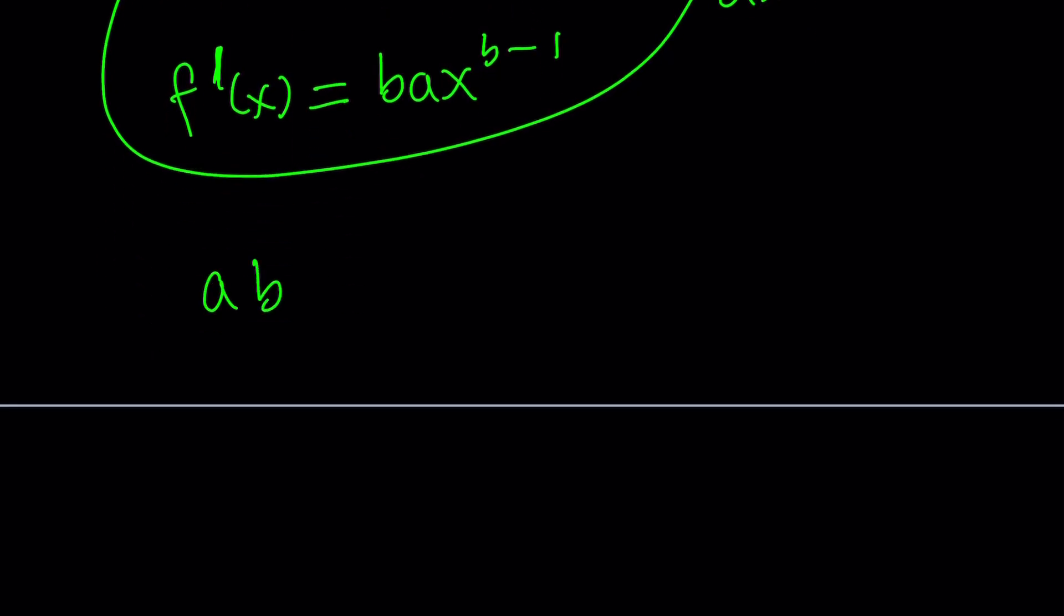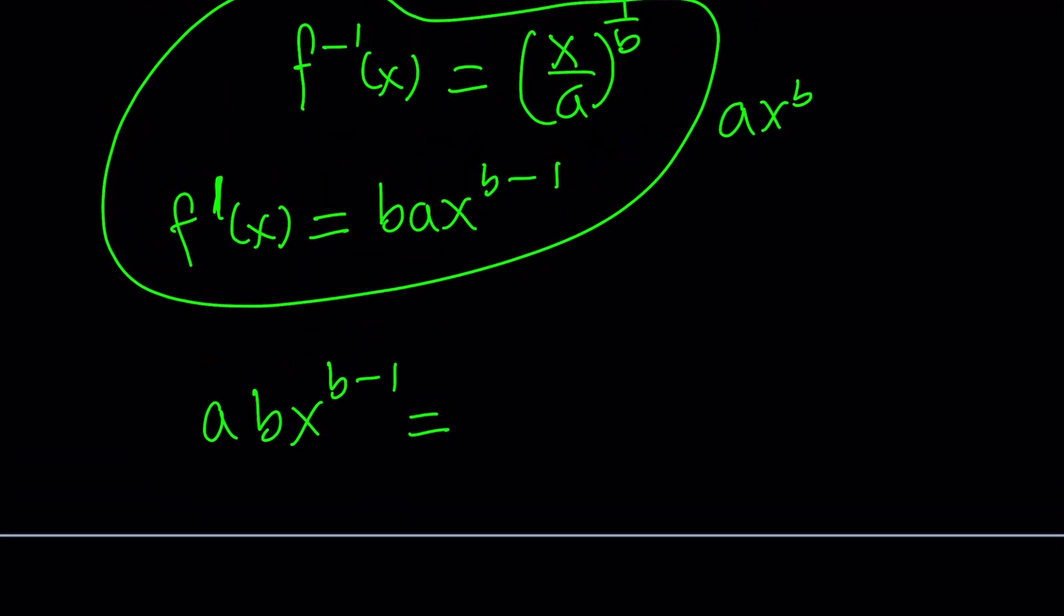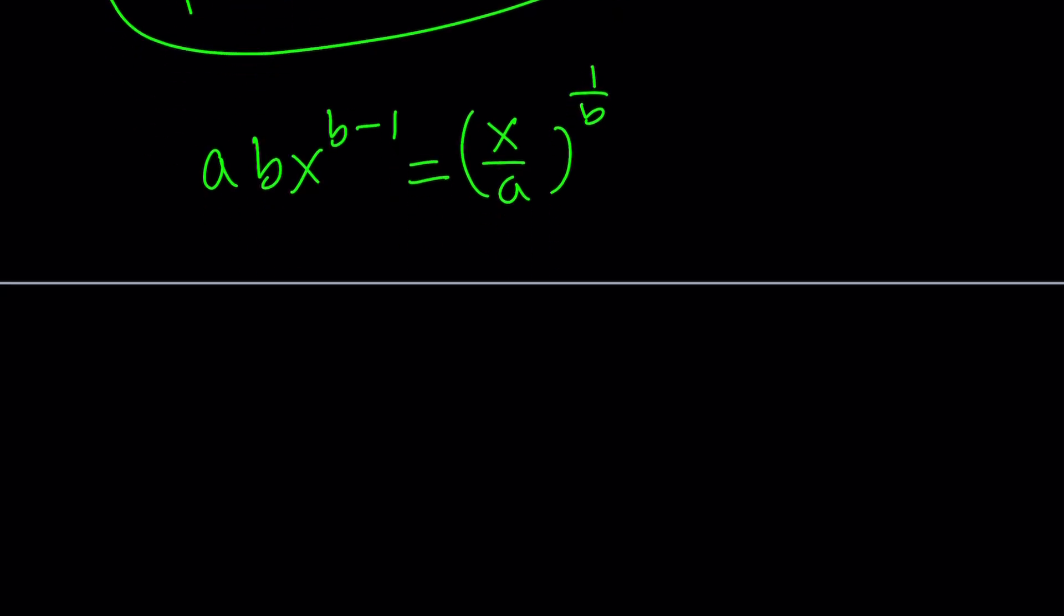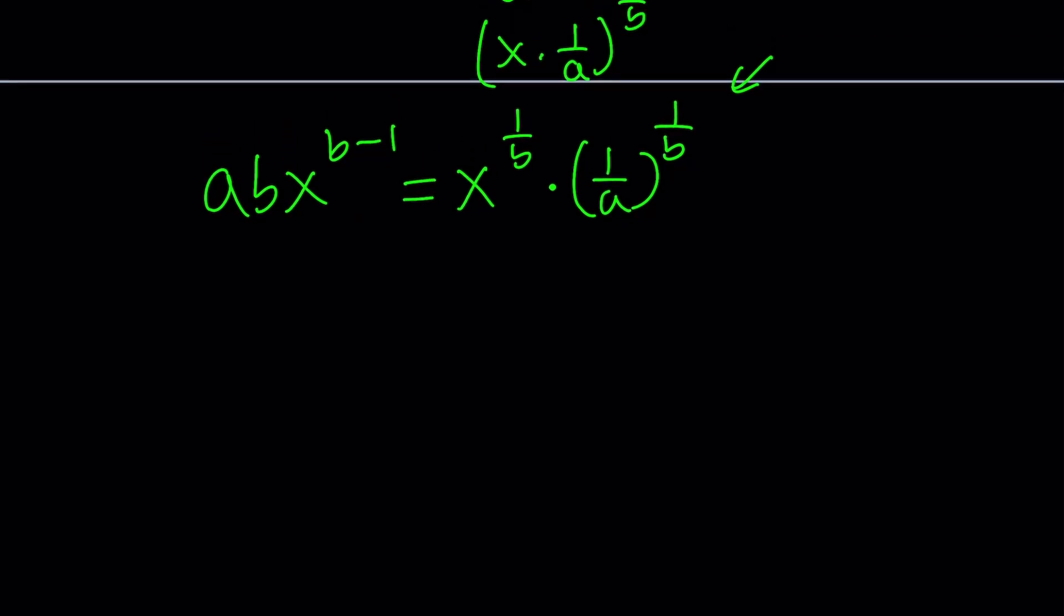We get ab x to the power b minus 1 equals x over a to the power 1 over b. Now, I'm going to have to write this a little differently. Because, I definitely want to isolate the x here. So, let's go ahead and separate this x over a into x times 1 over a. And, then raise it to the power 1 over b. And, that can be done by raising each factor to the power 1 over b. Don't worry about this weird expression. Because, that's just a constant. And, ab is a constant too.